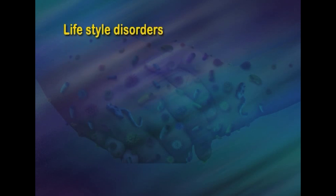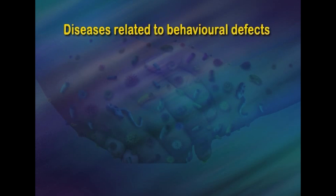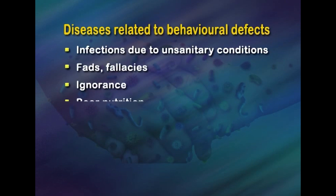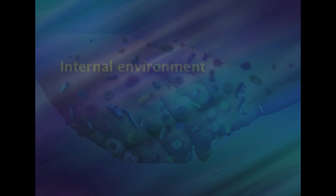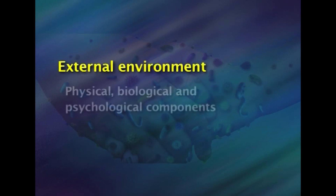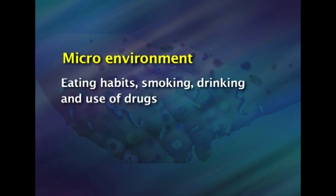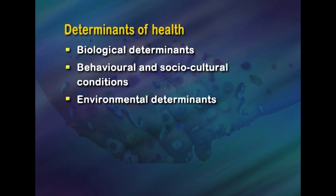Lifestyle disorders include coronary heart disease, obesity, lung cancer, oral cancer, and diabetes. Diseases related to behavioral defects include infections due to unsanitary conditions, fads, fallacies, ignorance, poor nutrition, wrong food habits, customs, and poor economic conditions. Environmental determinants include the internal environment — each component of the human system and its functioning — and the external environment, which includes physical, biological, and psychological components. The micro environment includes eating habits, smoking, drinking, and use of drugs; the occupational environment includes the socio-economic and moral environment.